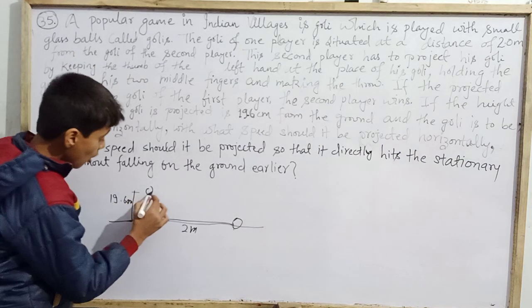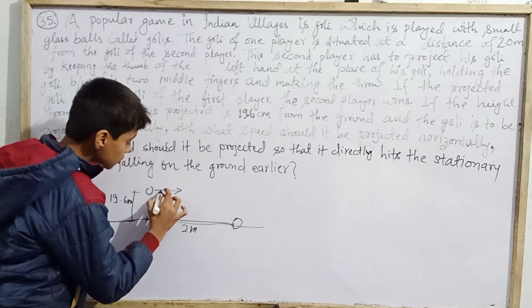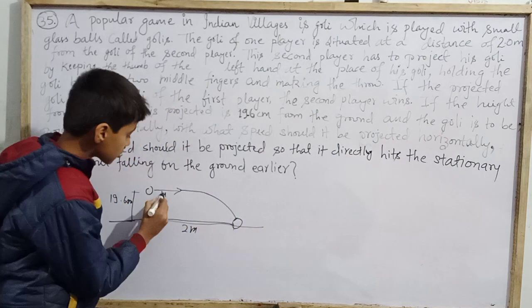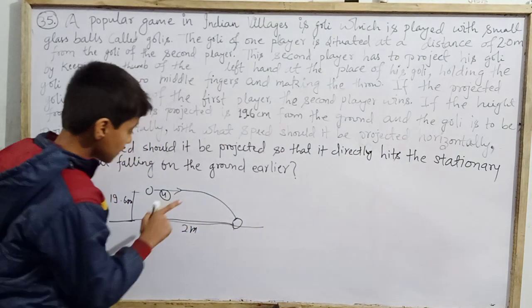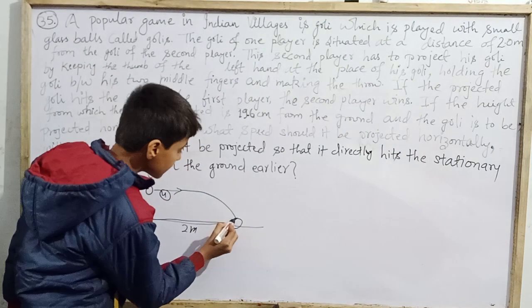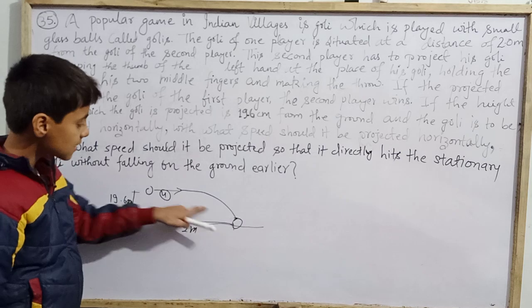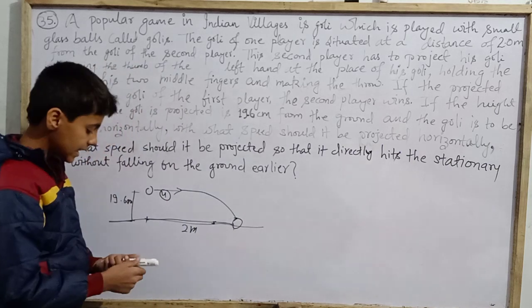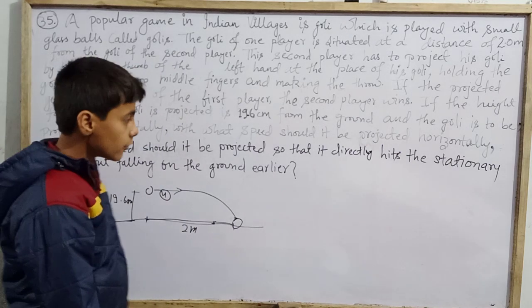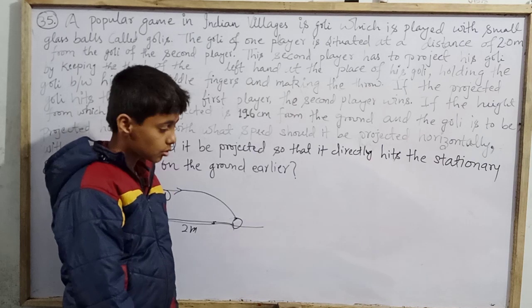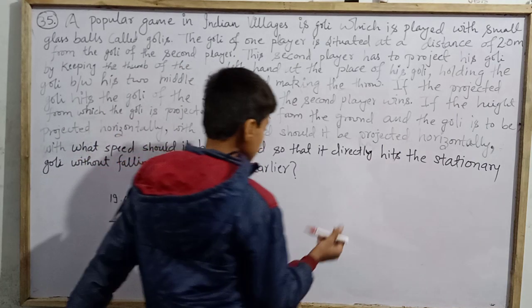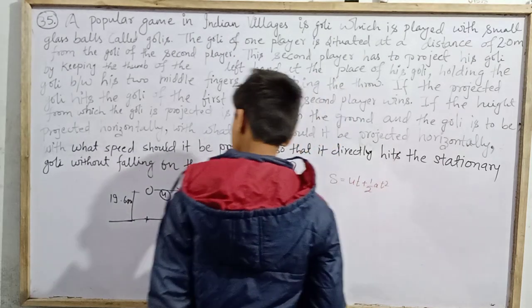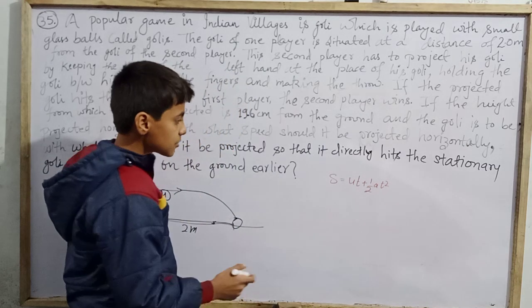If I am going to horizontally project this goalie, I have to make sure that my velocity value is such that it directly comes and strikes the other marble. To find the time it takes to fall, we can use the formula: under root of 2h by g. Let me write s = ut + half a t squared. For vertical motion, the y coordinate is: y = u_y·t + half·g·t².